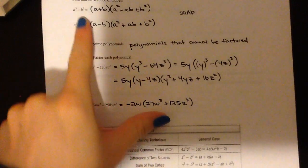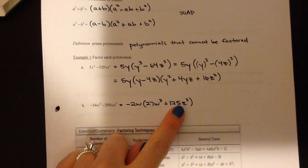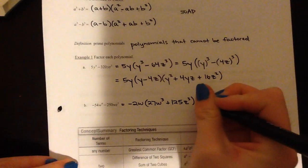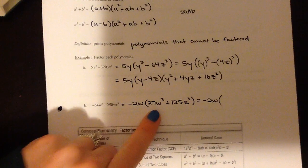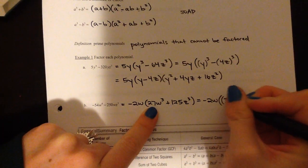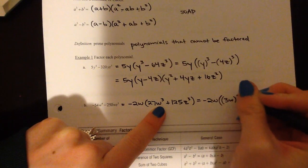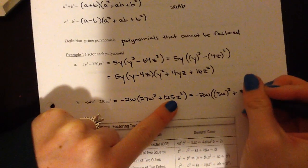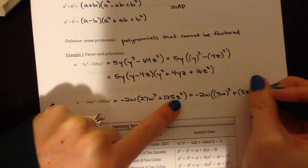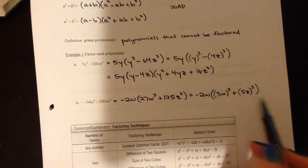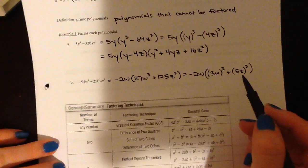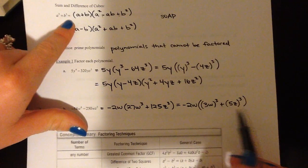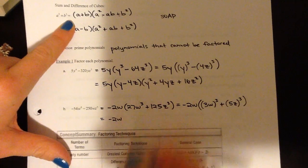Now I'm at the point where I have the sum of cubes — this is a perfect cube, and this is a perfect cube right here. I'm going to rewrite it so I can see what thing I cubed. Don't forget your negative 2w — it's going to be there the whole time. For 27: what do I cube to get 27? That would be 3. What do I cube to get w cubed? That would be w. So 3w cubed gives this. Then for 125: what do I cube to get 125? That's 5. And z cubed comes from z. So 5z times 5z times 5z gives 125z cubed. Now I'll fit this with the sum of cubes pattern, replacing every a with 3w and every b with 5z. Do not forget that your negative 2w is there.